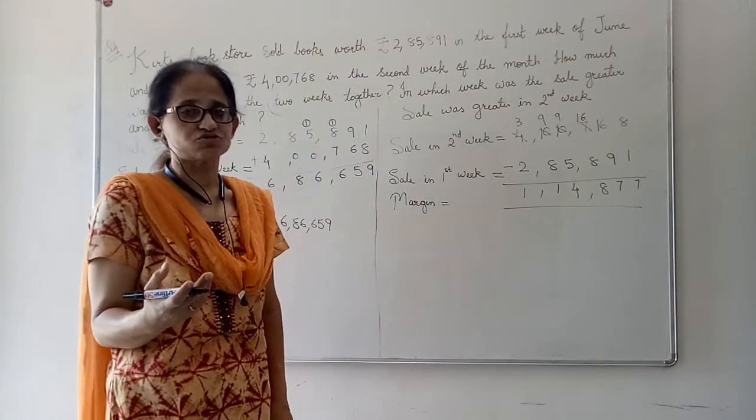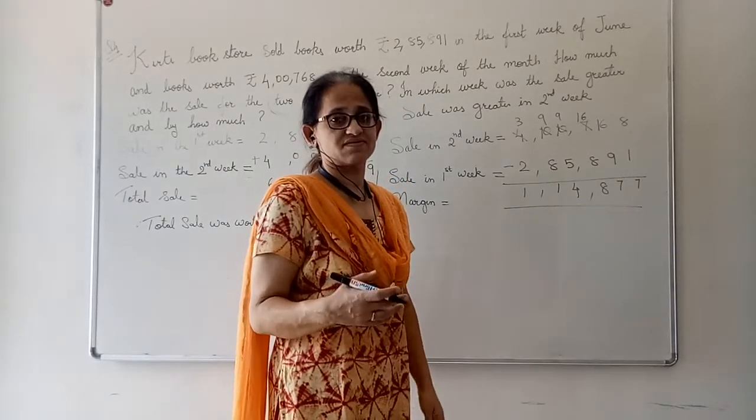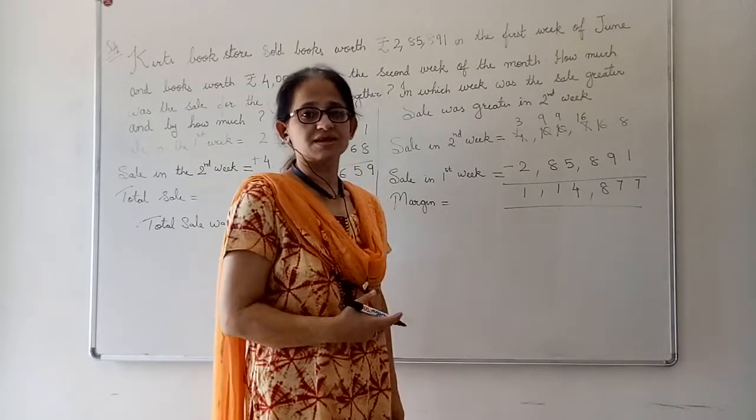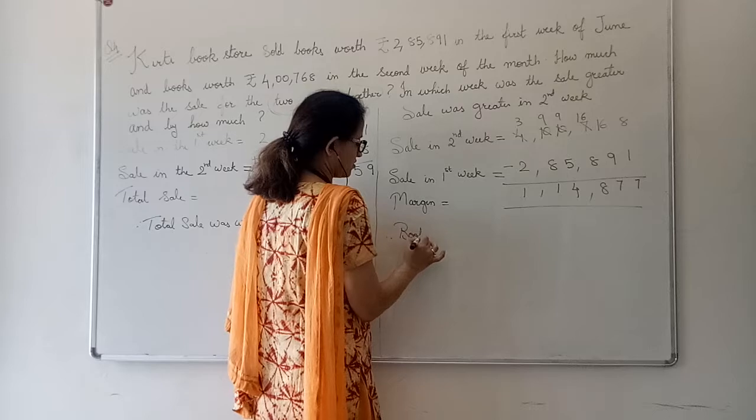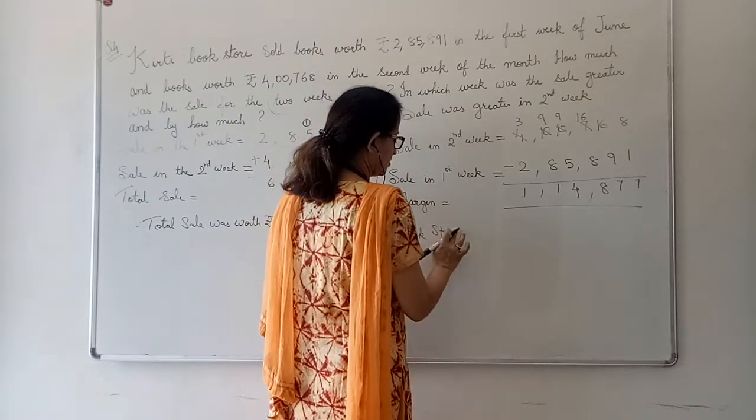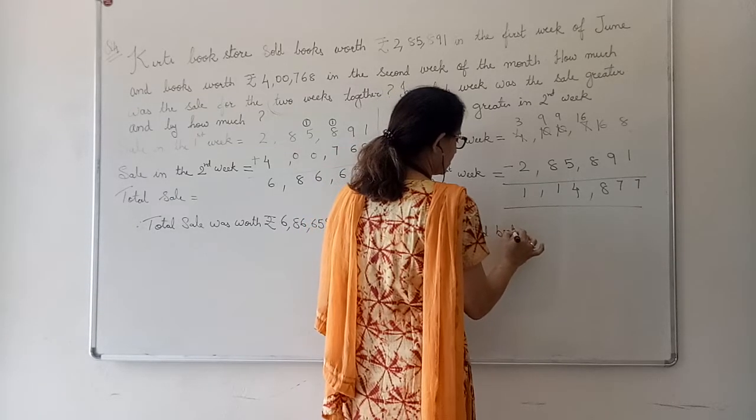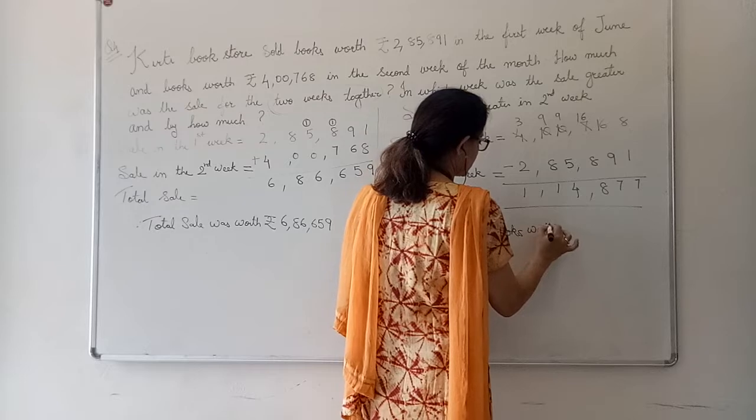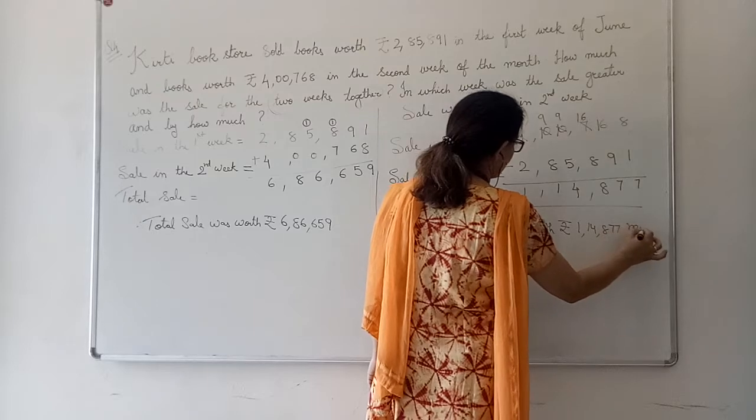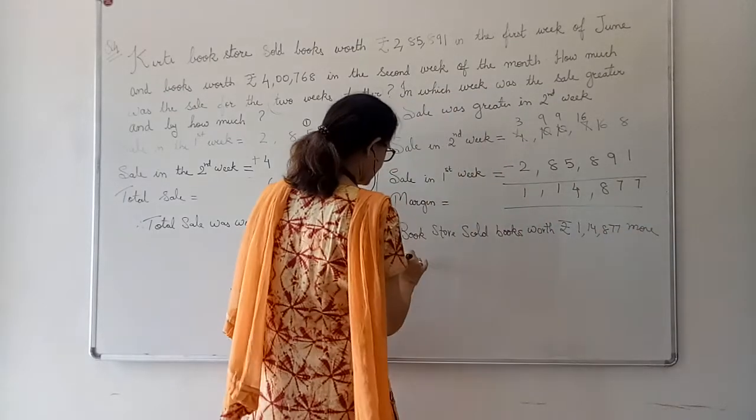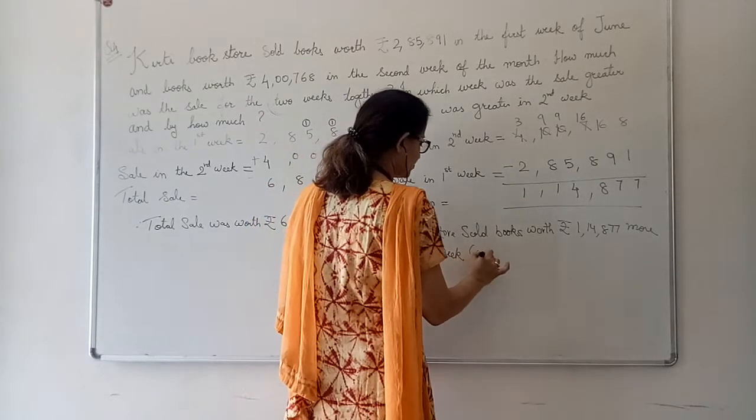So, how much more sales did the Kirti bookstore do? 1,90,877 rupees. They got more in the second week compared to the first week. Therefore, bookstore sold books worth rupees 1,90,877 more in the second week compared to the first week.